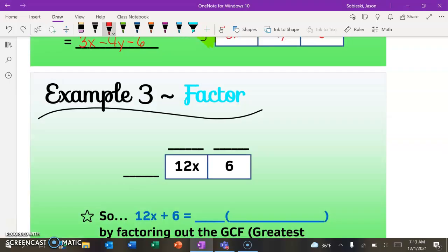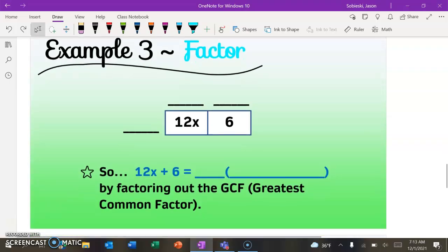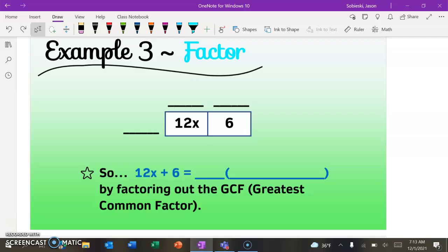All right, so again, we expanded, which means make it bigger. So all we're going to do in our example three and four is actually go the other way, which is factor. So you can see from our rectangle, it's filled in backwards. We were given the inside of the rectangle, and we need to figure out the outsides.